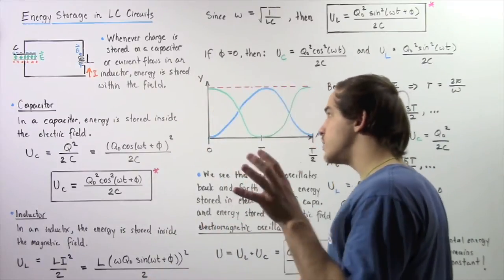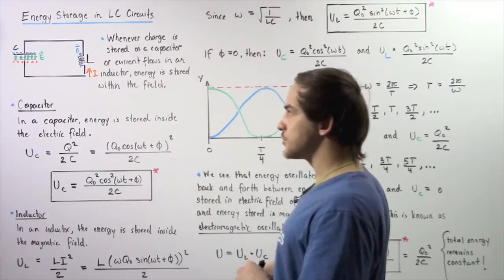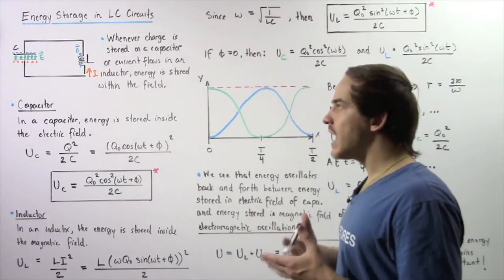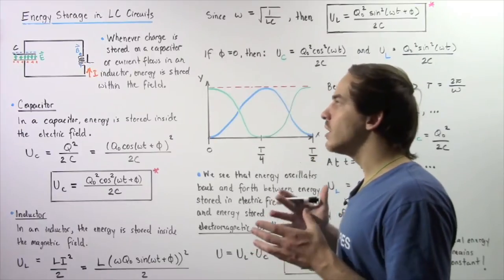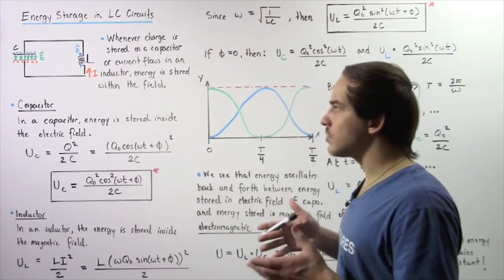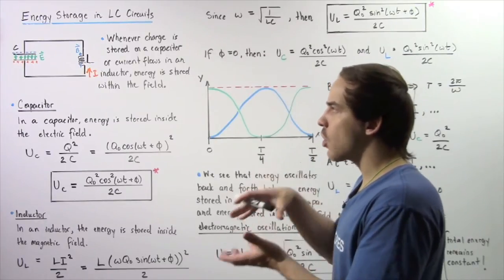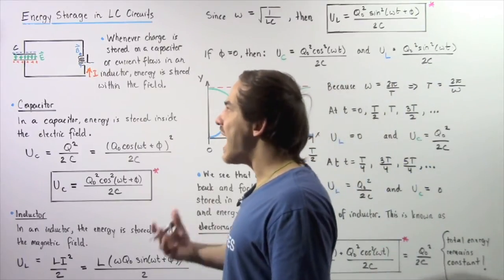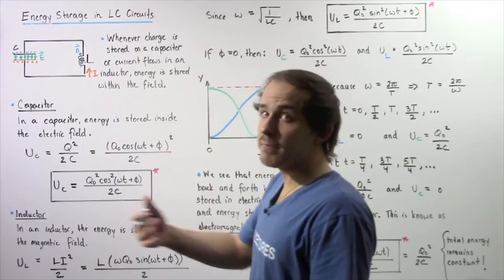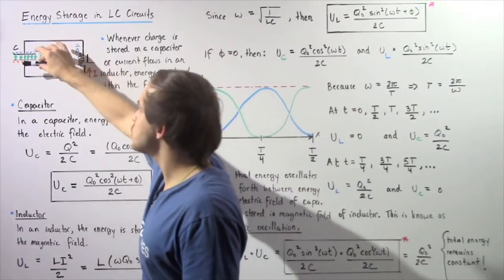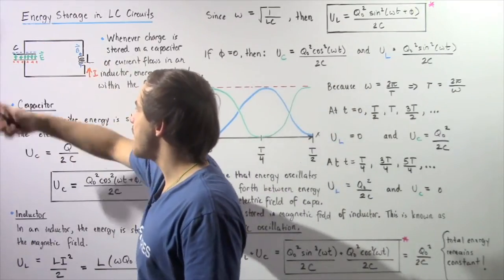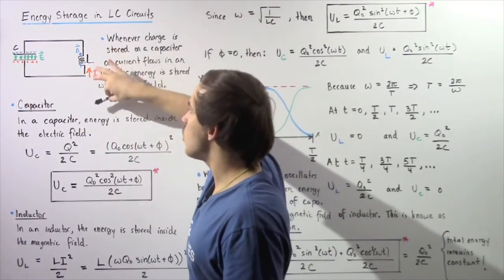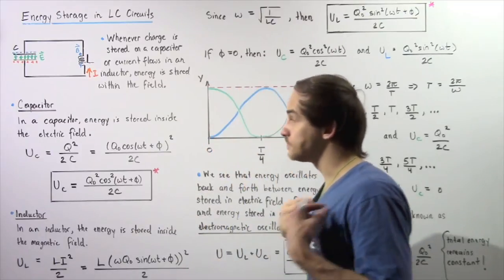As soon as we place our capacitor into our electric circuit, let's call that time zero. At time zero there's no electric flow inside our circuit because all the charge is stored on our two plates of the capacitor. But as time progresses, our charge begins to flow and that creates an electric current, which will flow through the coils of our inductor.